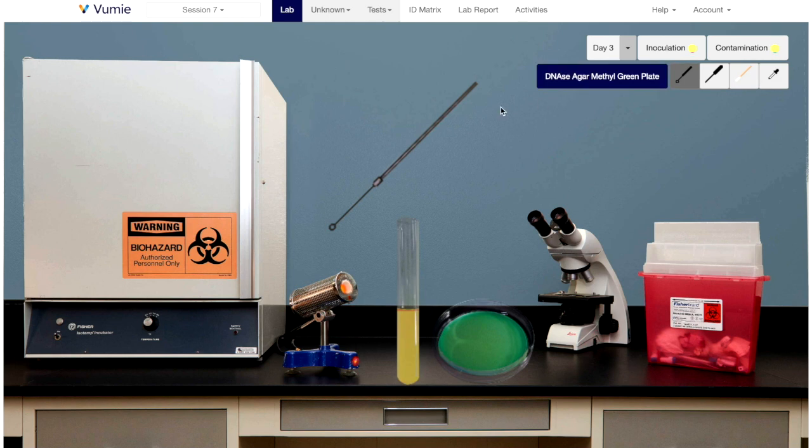Select the transfer tool and flame it. The tool used for streaking plates is an inoculating loop. Move the tip of the transfer tool down into the inoculum broth. A message will appear indicating success.